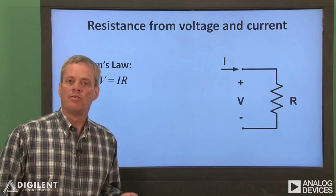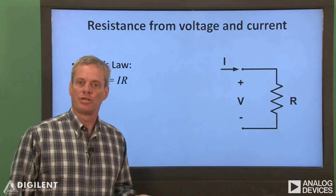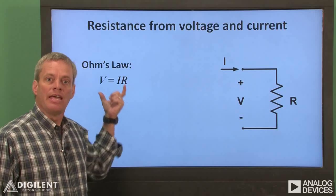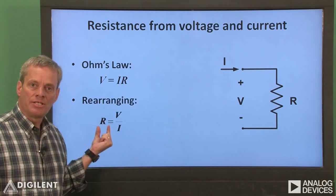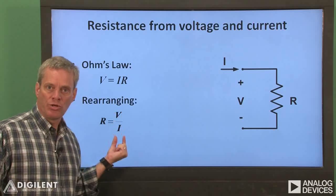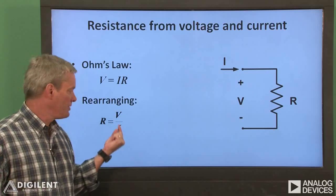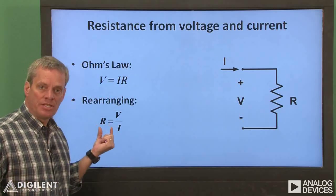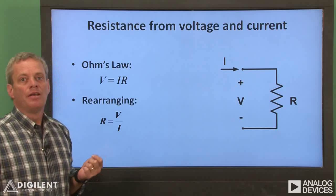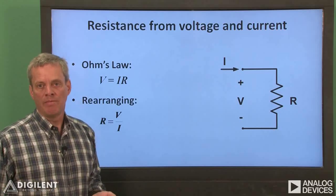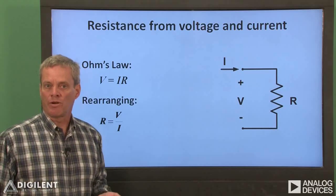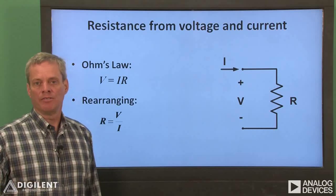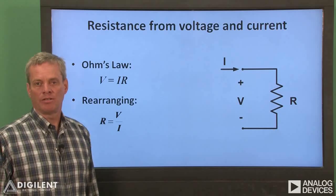Finally, let's talk about estimating resistance from a measured voltage and current. Ohm's law tells us that voltage is resistance times current. If we rearrange this, we can calculate resistance as the ratio of voltage to current. Therefore, if we measure both the resistor voltage and the current through the resistor, we can estimate the resistance from those measurements. We can measure either voltage or current with our DMM, but we can only measure voltage with our analog discovery. The quick start video on the voltmeter instrument will provide background information on measuring voltage with the analog discovery.